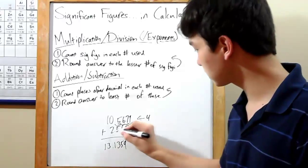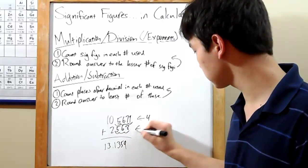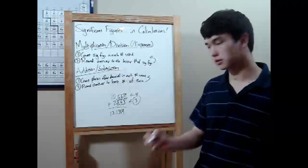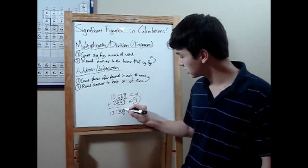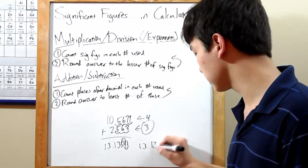Take the lesser, the 3, and so round to that many places after the decimal in your answer. Doing that will give you 13.136.